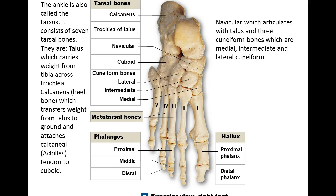The calcaneus is the heel bone, which transfers weight from the talus to the ground. The calcaneus also attaches the calcaneal tendon — generally called the Achilles tendon — to the cuboid. Whether you think of weight transfer from the body down or from the ground up, all of that is true; it just depends on your perspective.